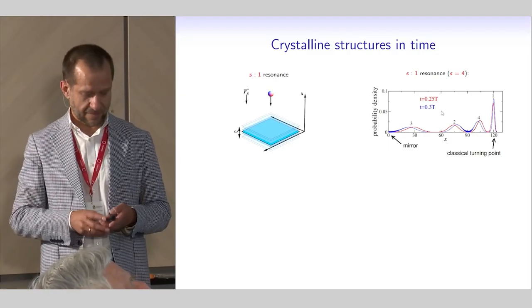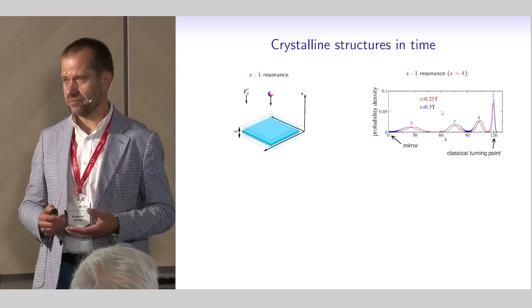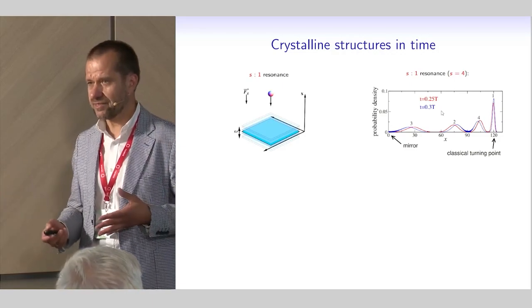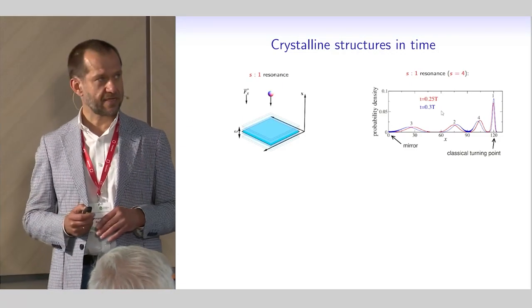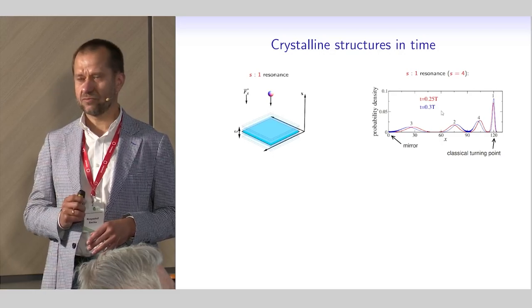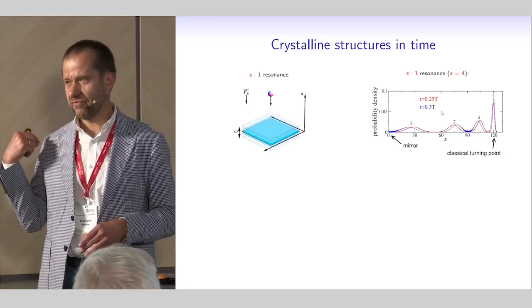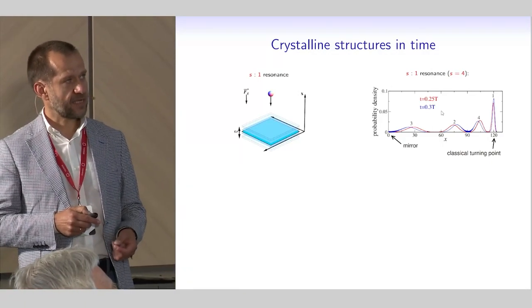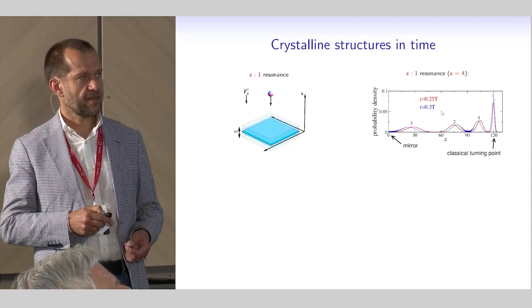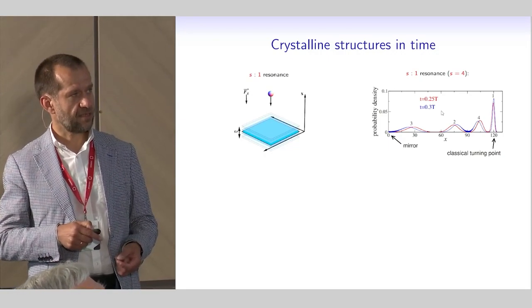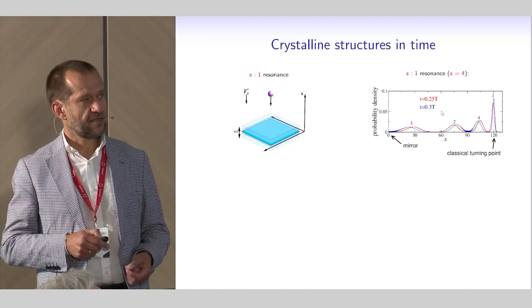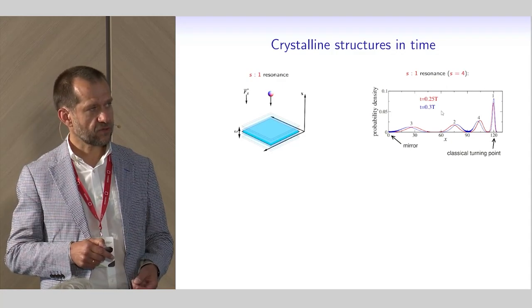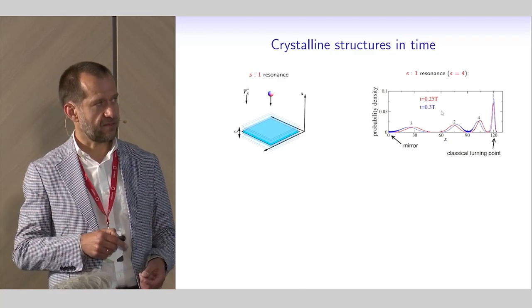Now let us switch to the quantum description. In periodic driving we can have Floquet states — there are many different Floquet states — but there are some resonant Floquet states which display the same kind of behavior as in the classical case. Here you can see the example for four-to-one resonance.